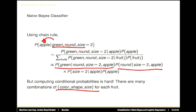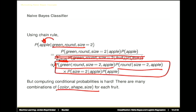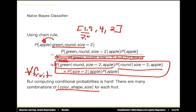Why did the equal sign become a proportionality? We got rid of the denominator — the sum over all fruits — because it's the same for all classes. So if we just want to know which fruit we're dealing with, we can ignore that term, compute the numerator for every fruit, and see which one is largest. After computing this for all fruits, you'll have a vector of values — say 0.9, 4, and 2. You sum them to get 6.9, then divide each by 6.9 to get the actual probabilities.